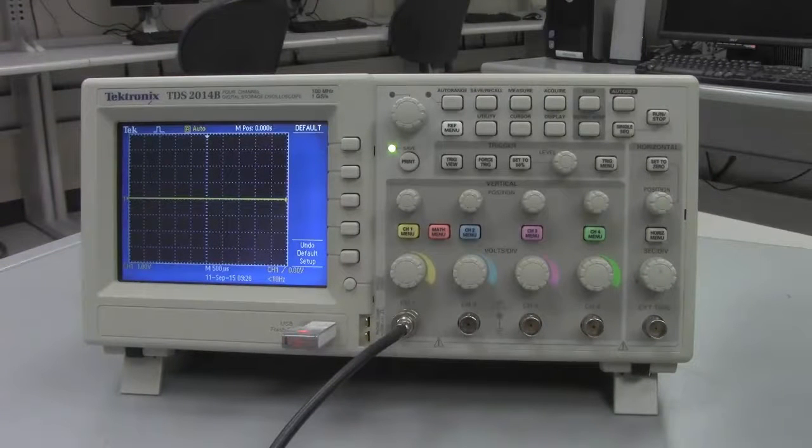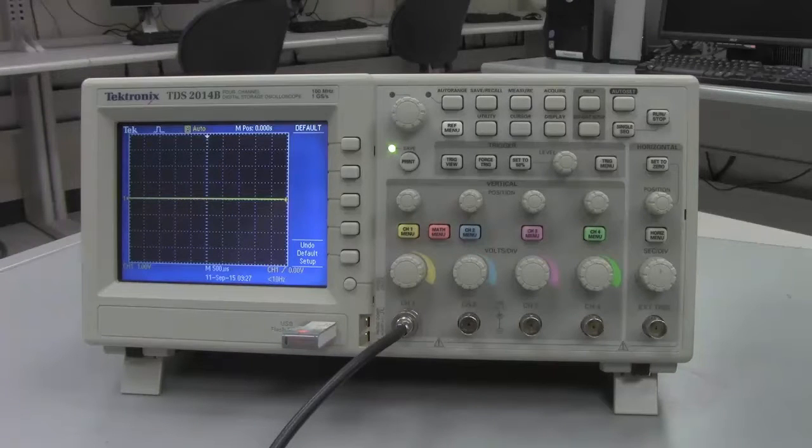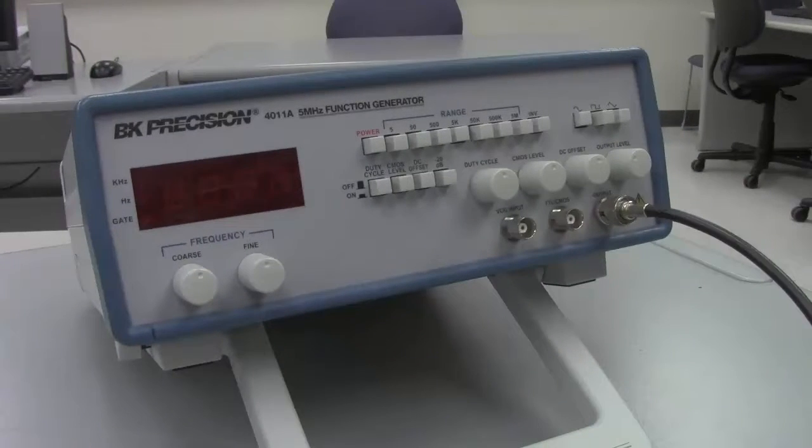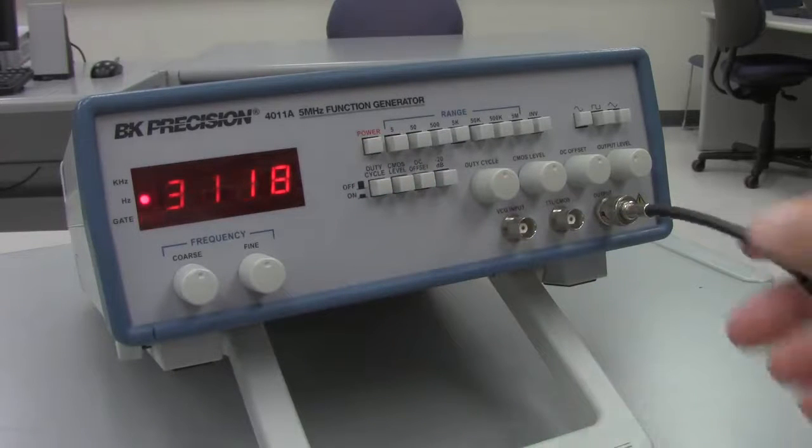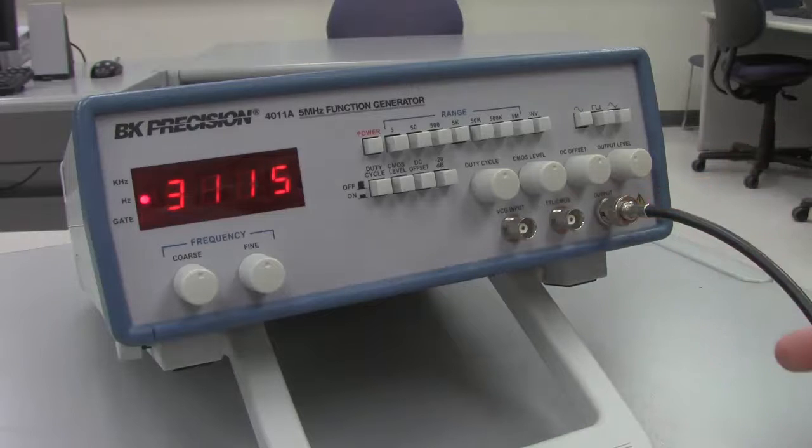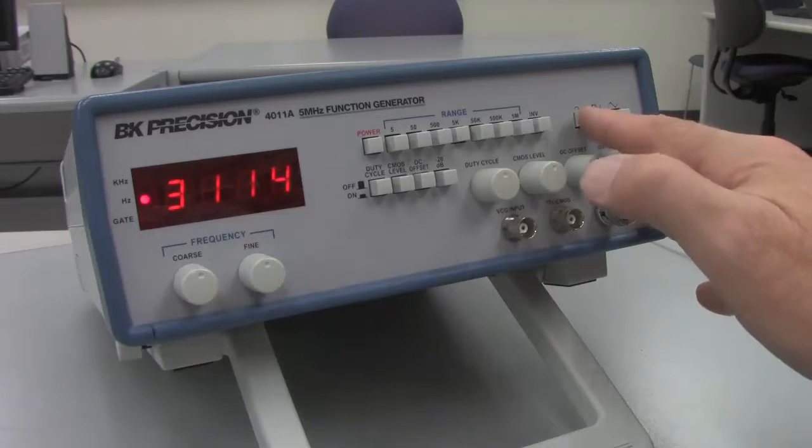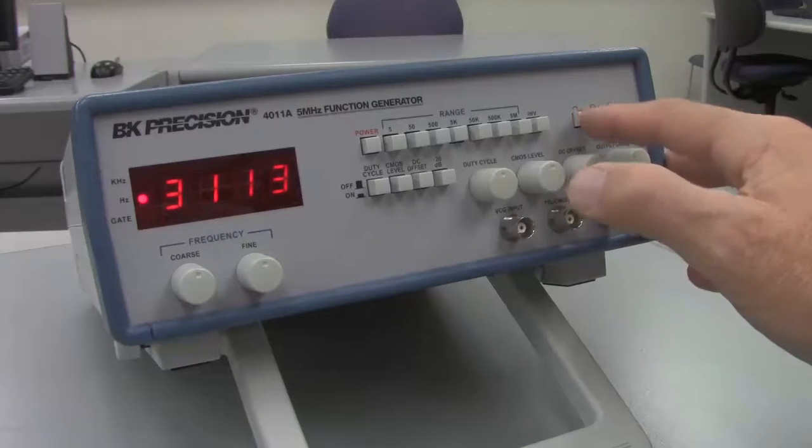Now that we've pressed the default setup so that the oscilloscope has come up in a known condition, we're now ready to start looking at signals. To do that, we're going to come over here and use our signal generator, turn on the power. I've connected the other end of the coaxial cable to the output here, and I want it to display a sine wave. We'll do it about 1 kilohertz, so 1,000 hertz. So I push the sine wave button.